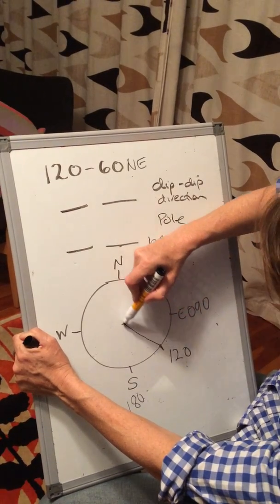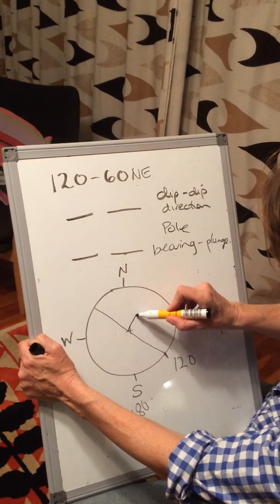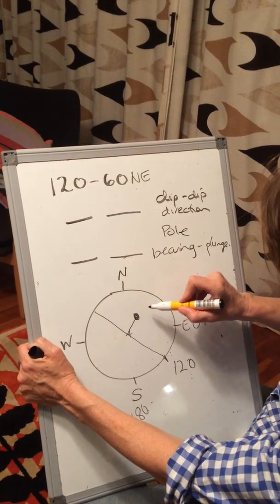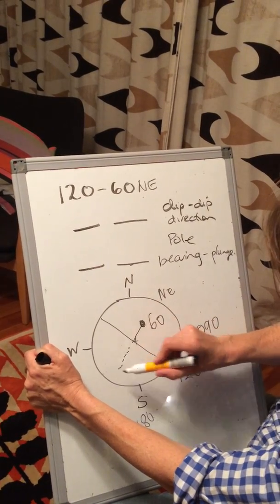Draw a line representing the strike, and the dip's 60 degrees to the northeast, so draw the dip, 60 degrees, that's the northeast, and the pole's going to be out here somewhere.